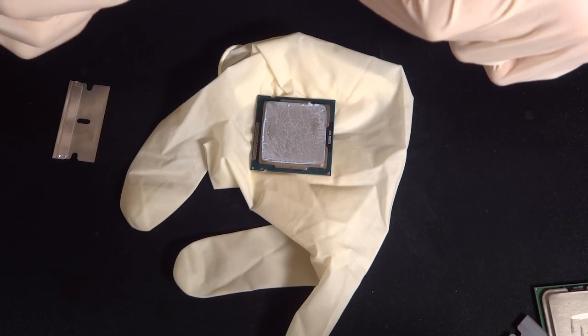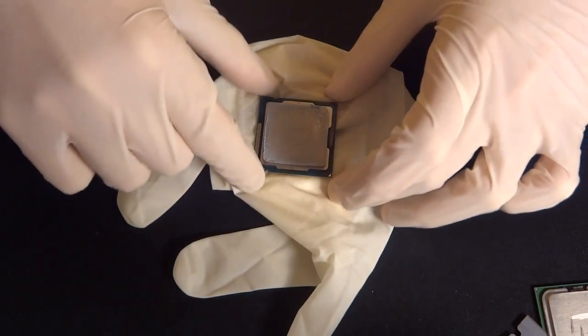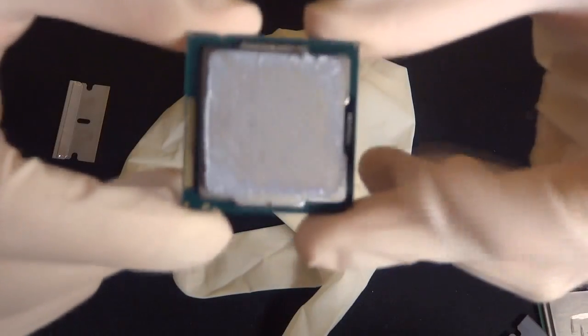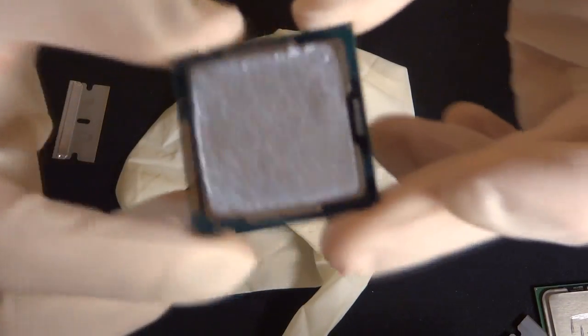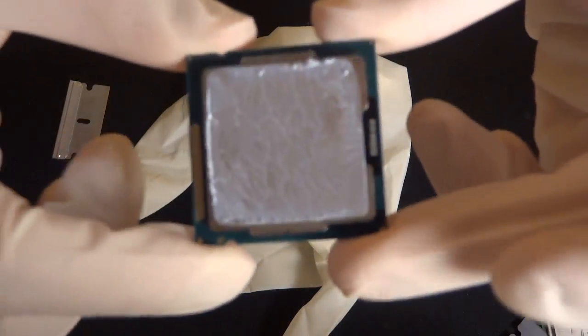Hey what's up guys, TotallyDubbed here and today I'm going to be showing you a video on delidding your CPU. Delidding is used for reducing temperatures, and throughout this video I'm doing a commentary over the video that I have so that certain bits are sped up and whatnot.